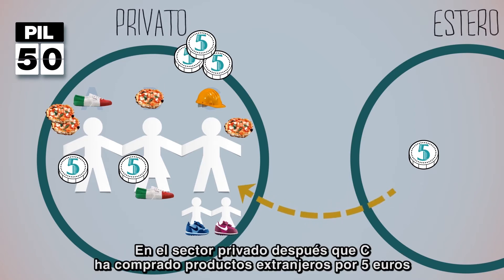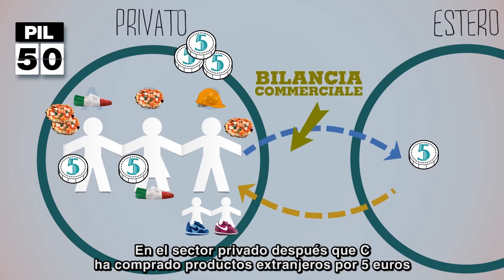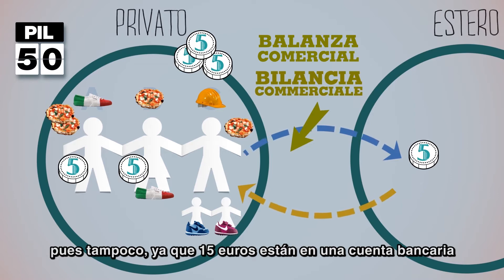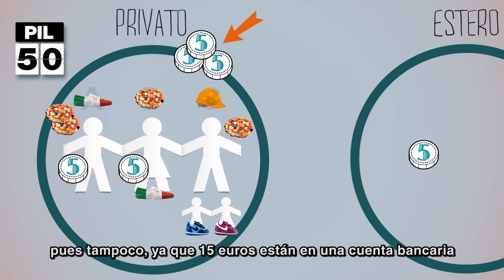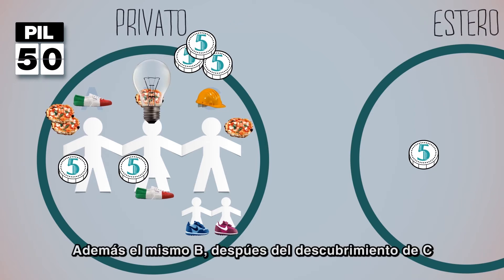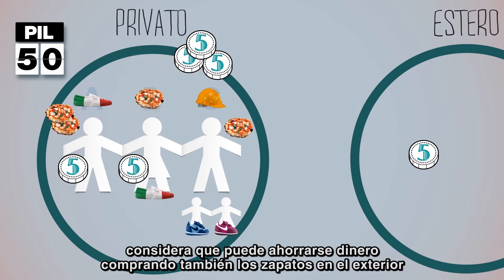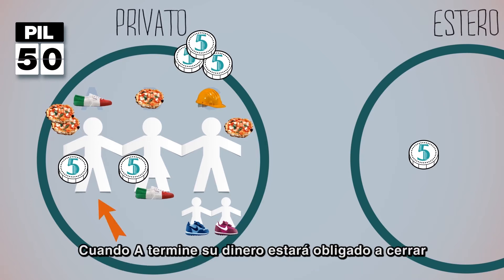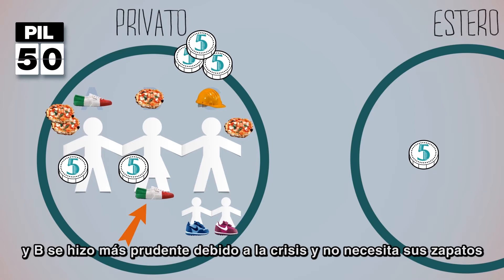Nel settore privato, dopo che C ha acquistato prodotti stranieri per 5 euro, la liquidità in circolazione è scesa da 30 a 25 euro. Anzi, soltanto a 10, perché 15 euro sono in un conto corrente e B non ha nessuna necessità di spenderli. Inoltre, sempre B, dopo la scoperta di C, pensa che potrà risparmiare un bel po' di soldi comprando anche egli le scarpe all'estero. Quando A avrà finito i soldi, sarà costretto a chiudere, perché non potrà più incassare, perché il suo prodotto è diventato troppo costoso, e B è diventato prudente a causa della crisi, e non ha bisogno delle sue scarpe.